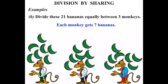So we had 21 bananas. We split it up 3 ways between 3 monkeys there. So we say that 21 divided by 3. The answer was 7.